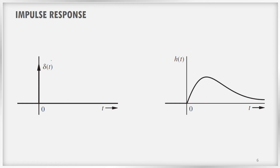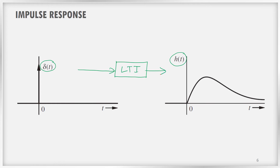We can represent this as: when we give δ(t) into an LTI system, it produces an output h(t). One important thing to notice is that even though the impulse signal is a momentary signal — a sudden shock happening at time t equal to zero — the response h(t) is not momentary. The response lasts for a longer time. If somebody hits you, that is like δ(t), a sudden impulse, but the pain remains in your body for a longer time — that is the impulse response.